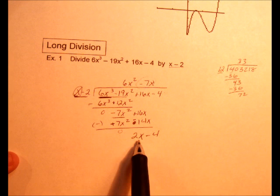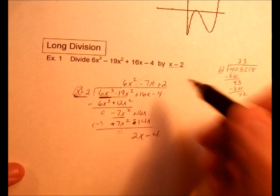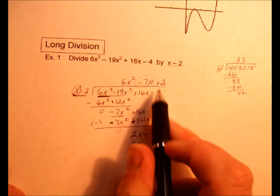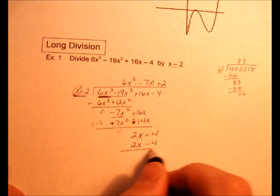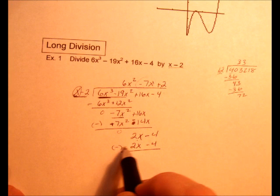x times what is 2x? That would be plus 2. So 2 times x is 2x, 2 times -2 is -4. We subtract those. And again, make sure you do it to both. So I just go through and make that a negative, make that a positive so I don't screw things up and forget the signs.